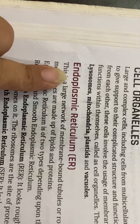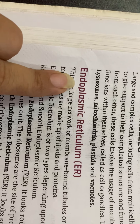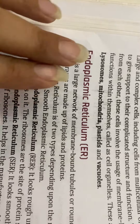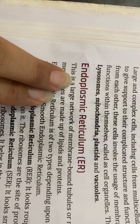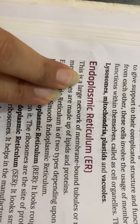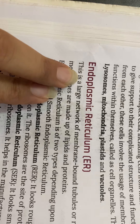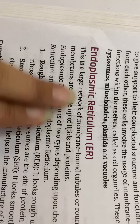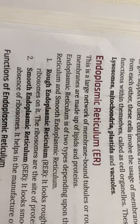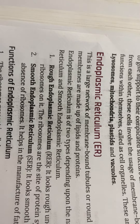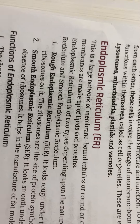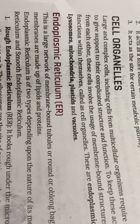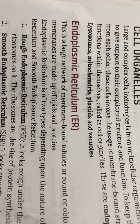The first cell organelle is the endoplasmic reticulum, which is present in both the plant cell and the animal cell. Endoplasmic reticulum is a large network of membrane-bound organelles and it is made up of proteins and lipids.